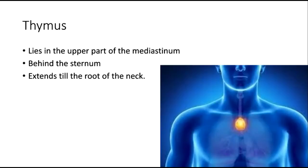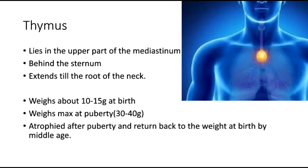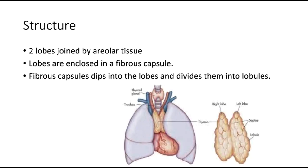The thymus gland lies in the upper part of the mediastinum, behind the sternum, and extends to the root of the neck. It weighs about 10 to 15 grams at birth, reaches its maximum weight of 30 to 40 grams at puberty, and then atrophies, returning to its birth weight by middle age. It has two lobes joined by areolar tissue, enclosed in a fibrous capsule that dips in and further divides them into lobules.